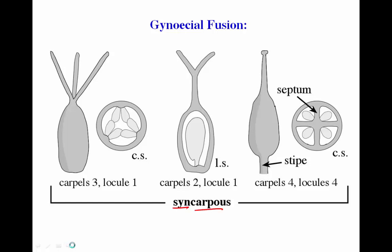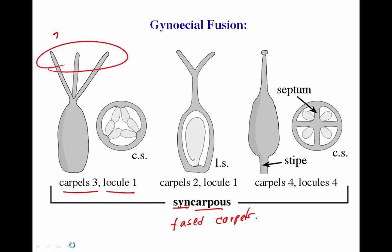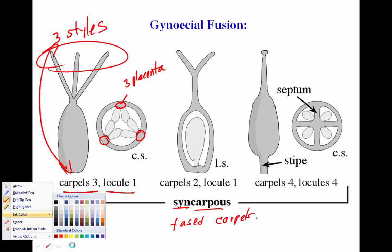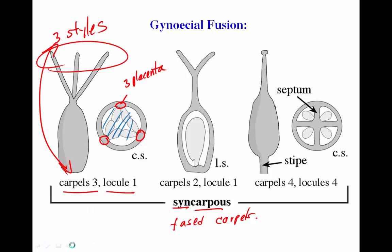Syncarpous ovaries are when we have fused carpels. We can then have different numbers of locules. In the first case, we have three carpels with one locule. How do we know there are three carpels? We can count the number of styles — three styles means three carpels — or we can count the number of placentas, the attachment places of the ovules. Three placentas and one locule tells us three carpels are fused together, leaving only one small space in the center.